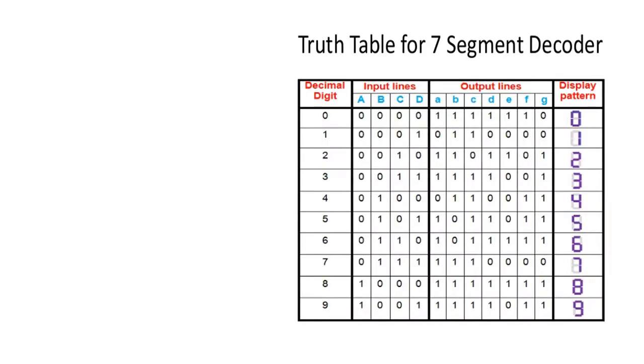Considering this 7-segment decoder, we have 4 input lines ABCD and 7 output lines, and you can see the display pattern. To display 0, the G element or G segment should be 0 and remaining all are going to be 1 or activated.